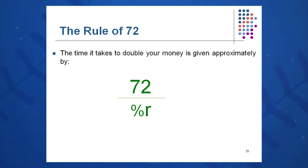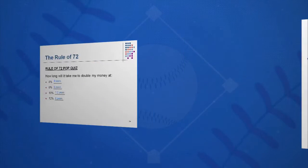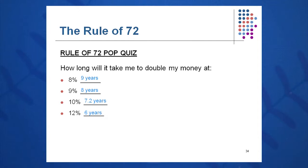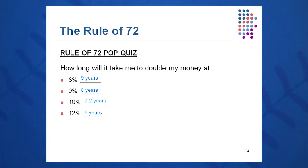Let's have a rule of 72 pop quiz. How long will it take you to double your money at 8%? 72 over 8 — 9 years. Again, these are good approximations. How about if I can invest my money at 9%? Very simply, 8 years. 72 over 9 is 8.